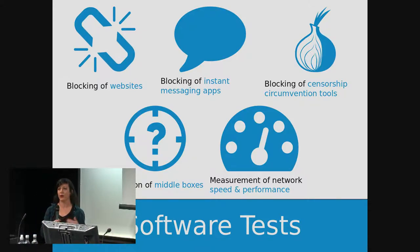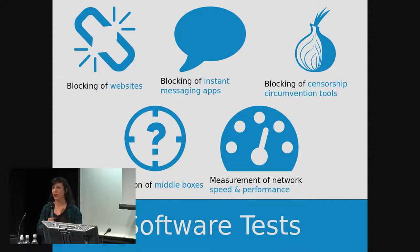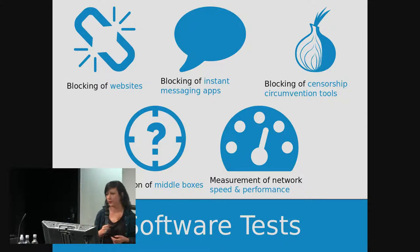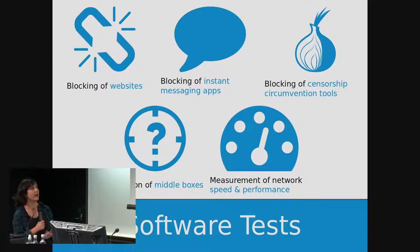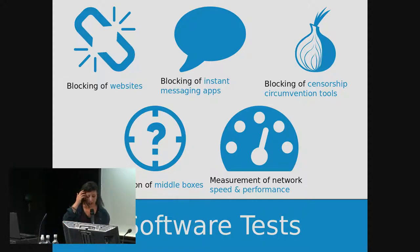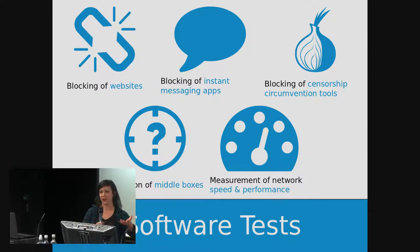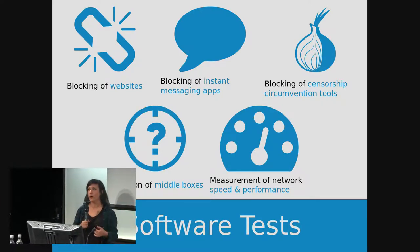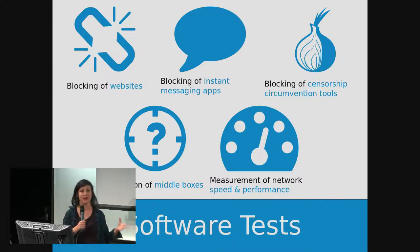More recently, we've also integrated tests designed to measure the speed and performance of networks. One of these tests is called NDT. The other is called Dash, which is designed to measure video streaming performance. In addition to measuring the speed and performance of your network, which in itself is very useful, the data collected from these tests can also potentially be used to examine more subtle forms of censorship, such as throttling.